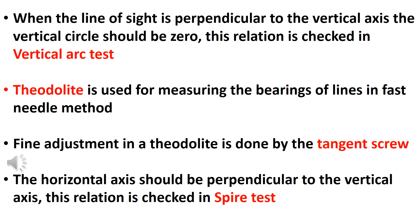When the line of sight is perpendicular to the vertical axis, the vertical circle reading should be zero. This relation is checked in the vertical arc test.